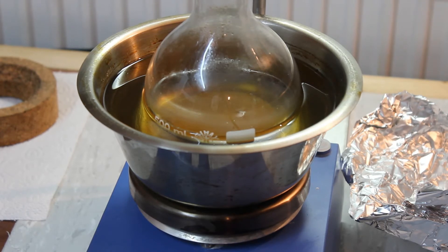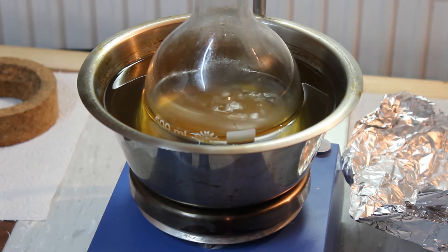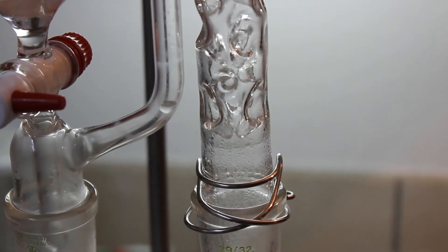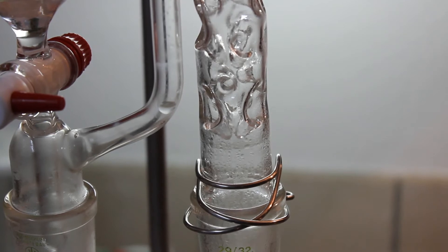So I'll monitor this and once it seems to reach a steady boil I'll back down the heating and we'll distill off our ether. We observed the first droplets of ether condensing on the bottom of the Vigreux column.